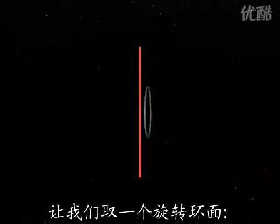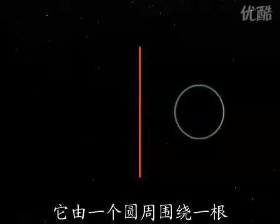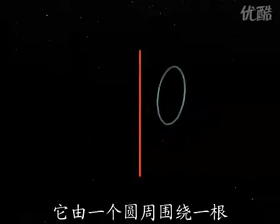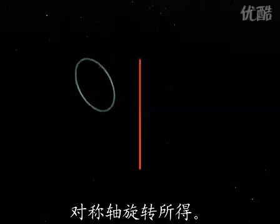Take a torus of revolution. That is, the surface described by a circle rotating around an axis in its plane.